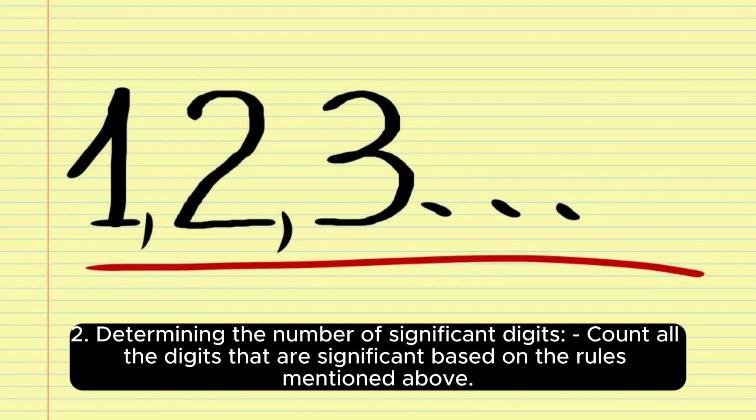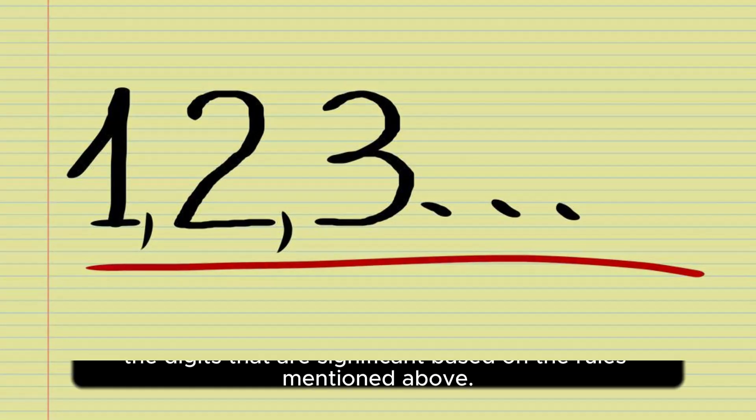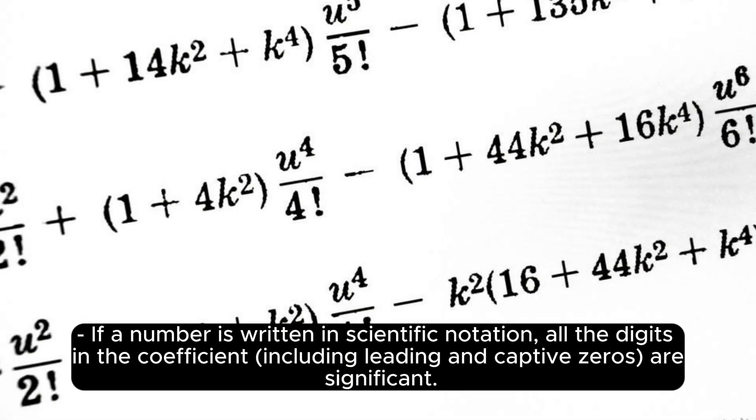2. Determining the number of significant digits. Count all the digits that are significant based on the rules mentioned above. If a number is written in scientific notation, all the digits in the coefficient, including leading and captive zeros, are significant.